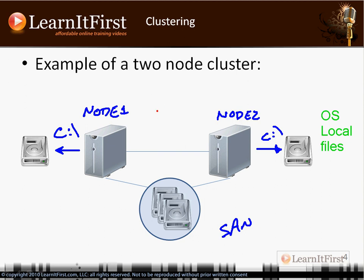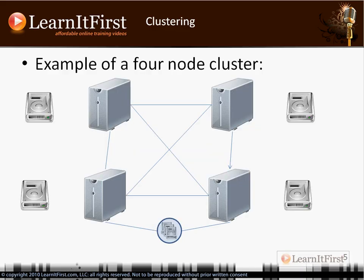When users want to come into the cluster, the cluster administrator defines what's called a virtual server — we'll name ours SQL Cluster. The virtual server is what our clients connect to. Clients don't connect directly to node 1 or node 2; they don't even know those machines exist. As far as the clients are concerned, there is one machine called SQL Cluster. It's almost like cloud computing at the network level — behind the scenes SQL Cluster could be two servers or even four servers.